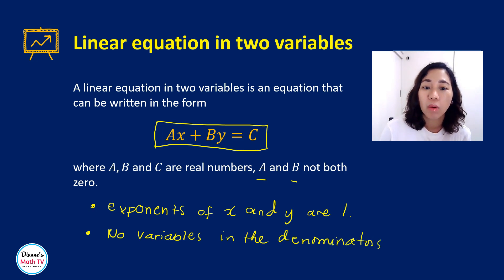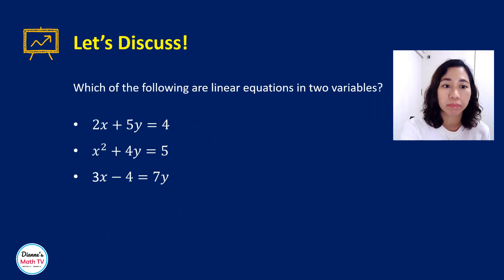So for example, which of the following are linear equations in two variables? And if there are linear equations in two variables, determine what your A, B, and C is.